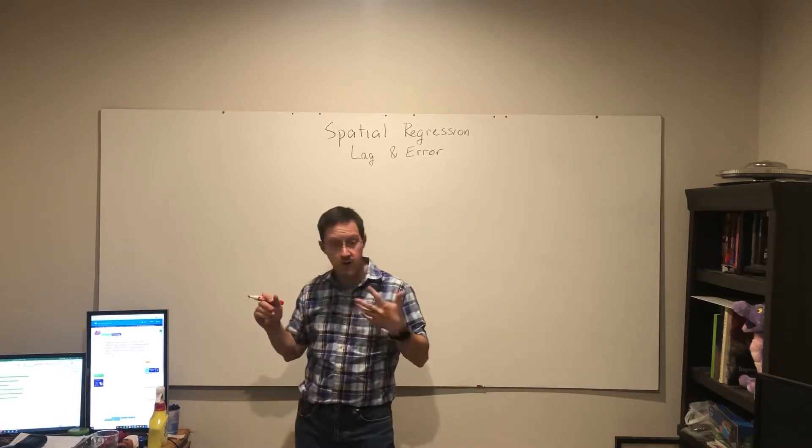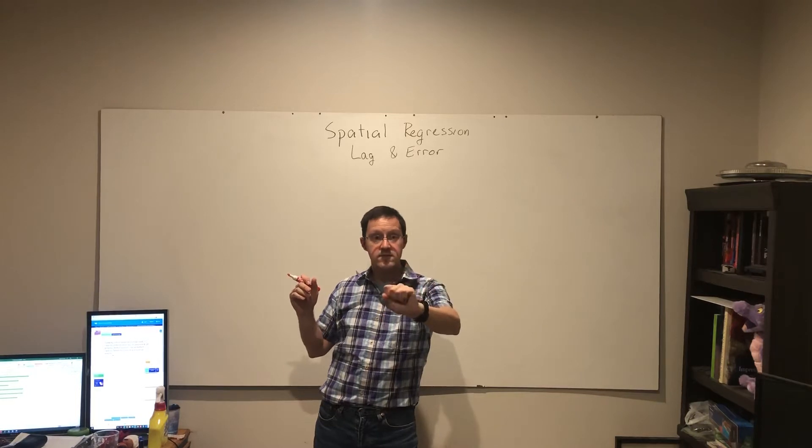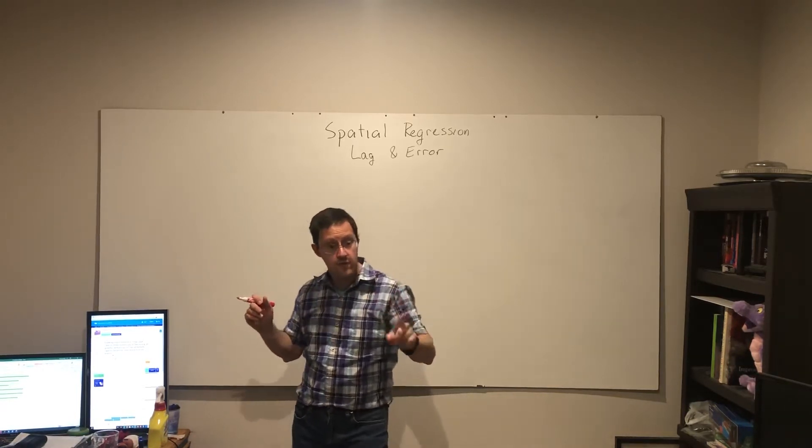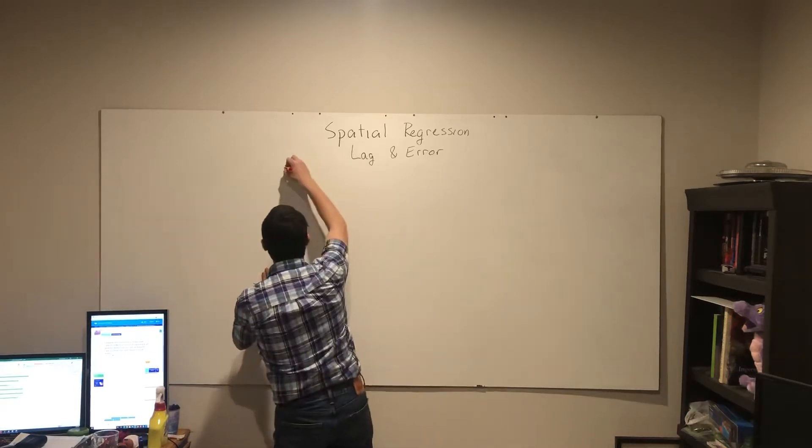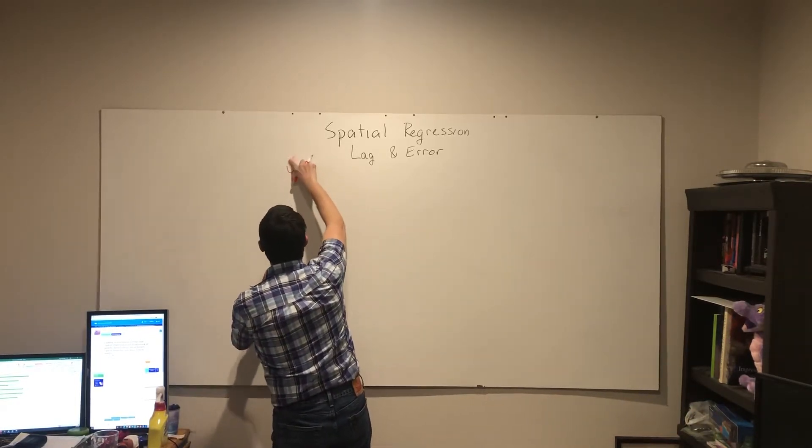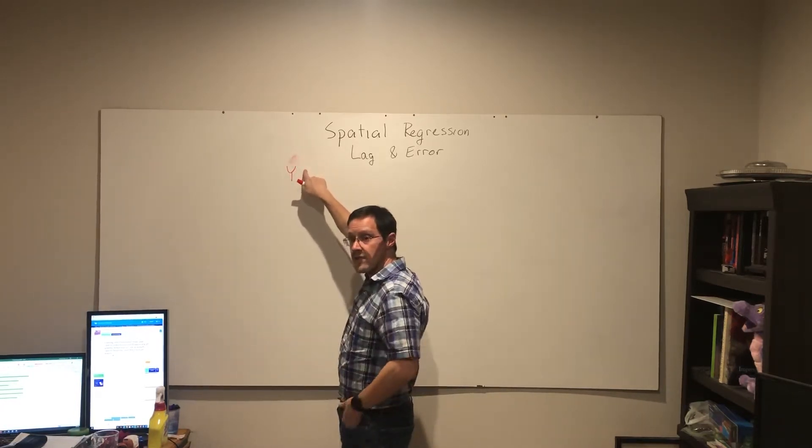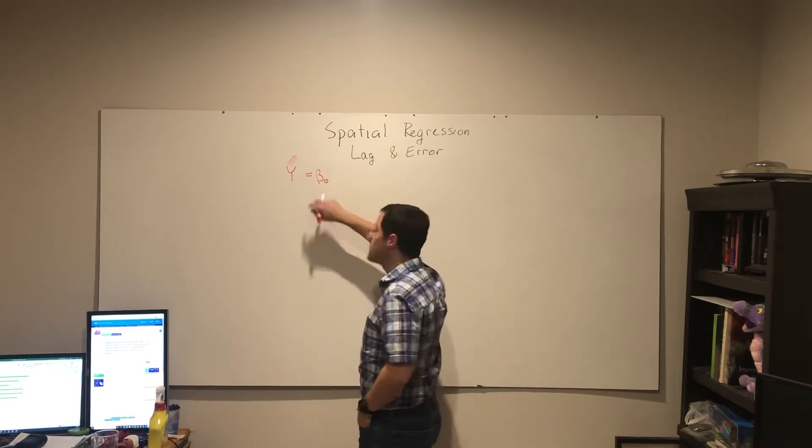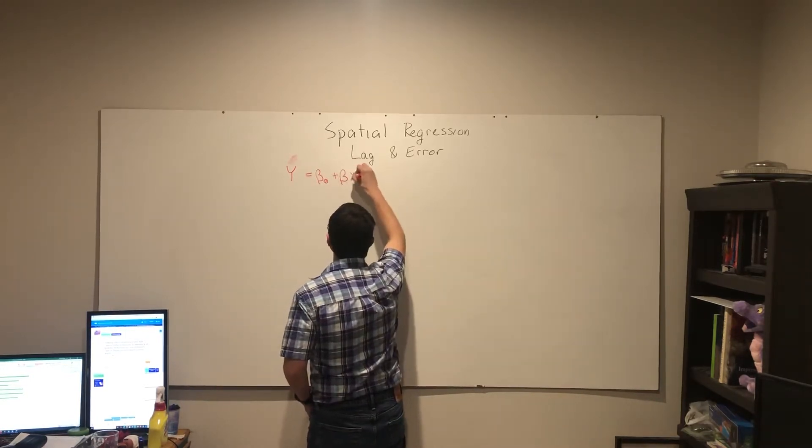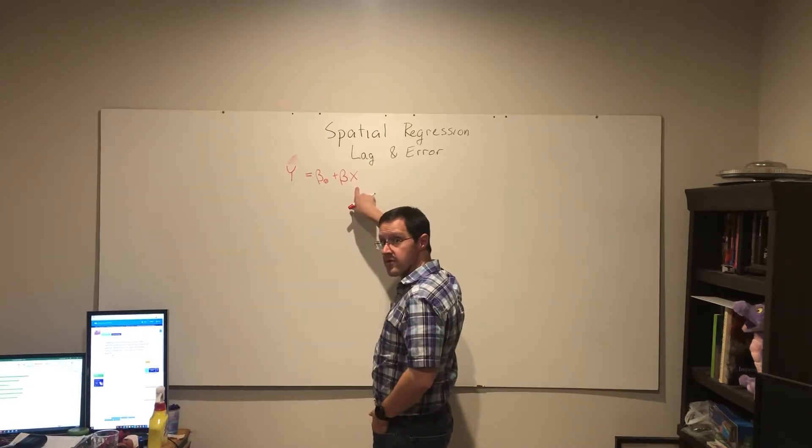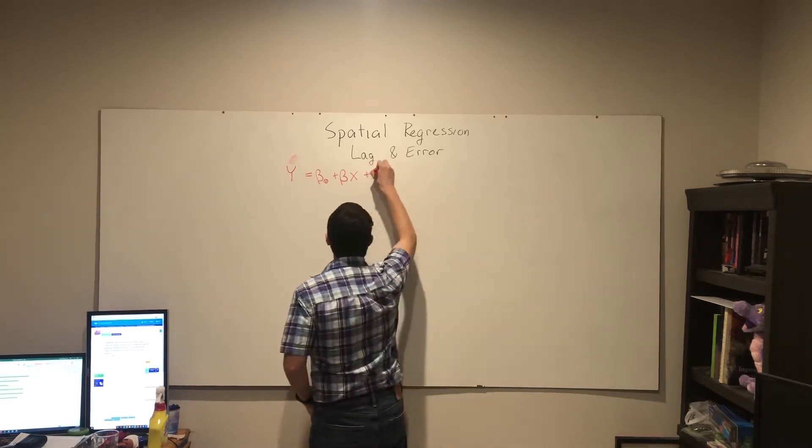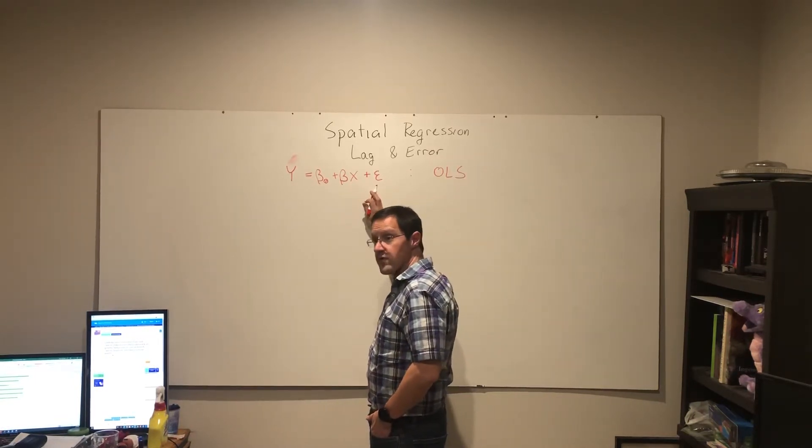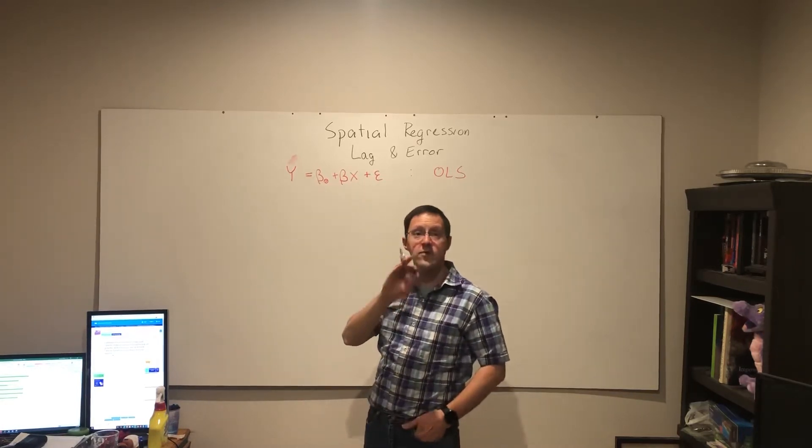So remember from our ordinary least squares bivariate linear regression, we have the following structure. Our dependent variable y is our intercept plus our coefficient times the independent variable plus the error term or the residual. And it's important really to look at and focus on the residual here.